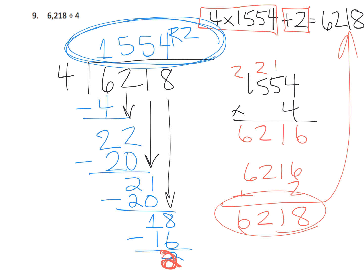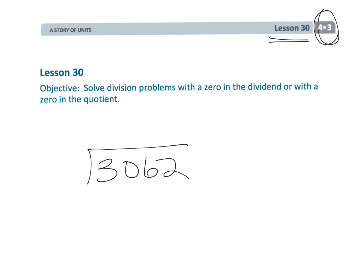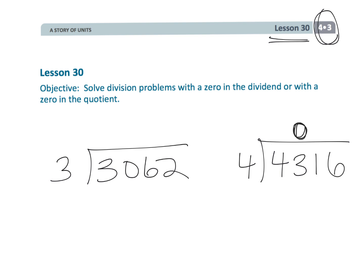Interestingly, this last problem is a counterexample — there are no zeros in the dividend and no zeros in the quotient, so it doesn't exactly fit the lesson's theme. Anyway, that wraps up fourth grade module 3 lesson 30, where we're dividing slightly more complicated problems that have a zero inside the house in the dividend, or sometimes a zero in the quotient.